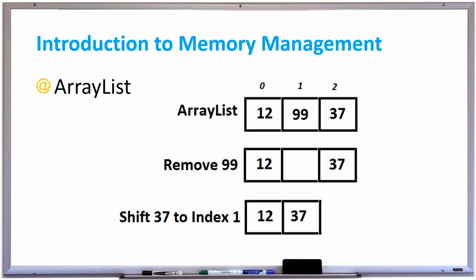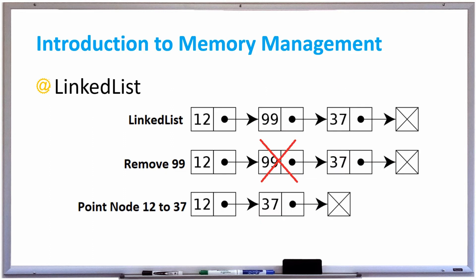So that's a big performance problem, and to address that we're going to talk about a linked list, which looks like this. We have 12, 99, and 37 again, but now they're nodes. A node is simply the data item — the number 12, 99, or 37 — and also a pointer from one node to the next node consecutively. 12 is considered the head node and this is the tail.